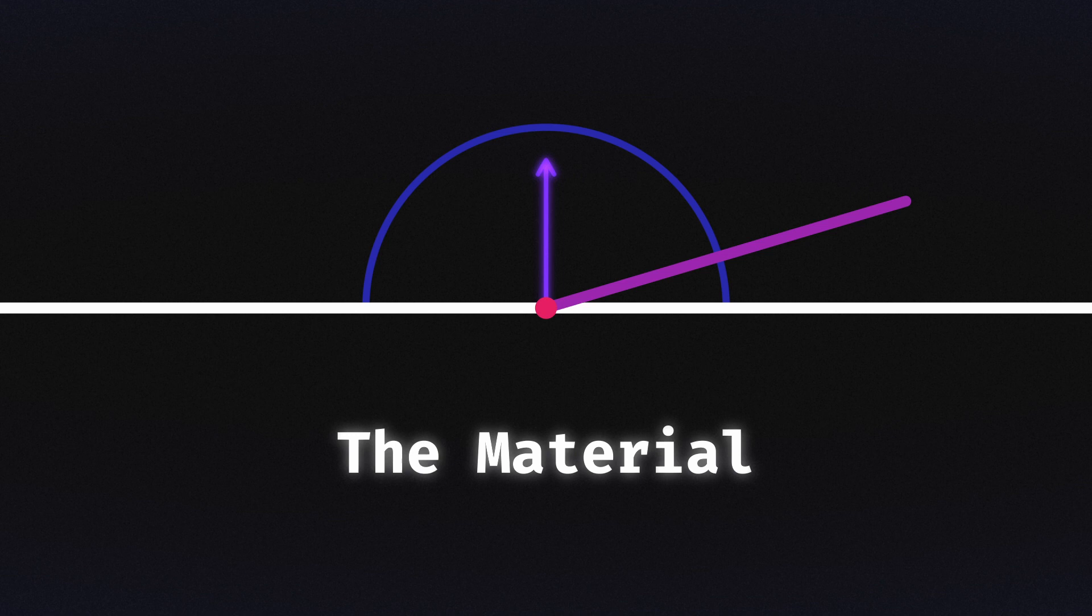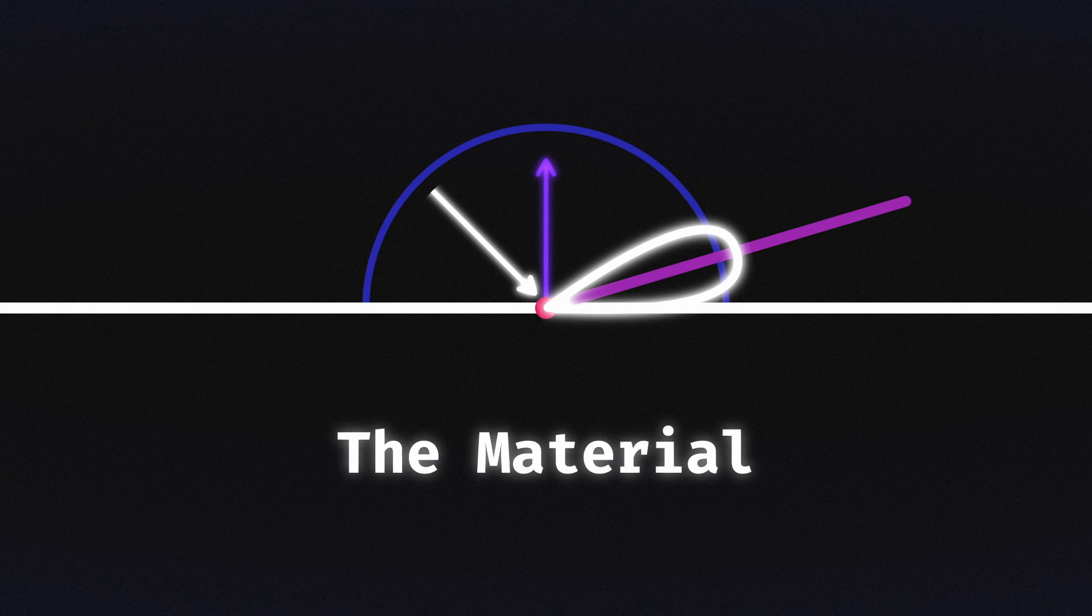So now we also have to somehow take into account the material of this object. Materials can behave in a wide variety of ways, but they essentially just affect the amount of incoming radiance from a certain direction that is reflected in the outgoing direction in consideration. For example, they are responsible for things like roughness and specularity, but also the colour of the object.